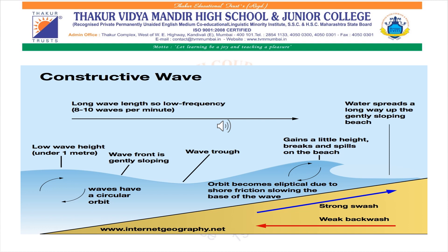Now, types of waves. Waves can be constructive or destructive. Constructive waves are flat and low in height and have a long wavelength. The strong swash carries material up to the beach, forming a berm. They have a low frequency of between 6 and 8 waves per minute, resulting in a weak backwash.